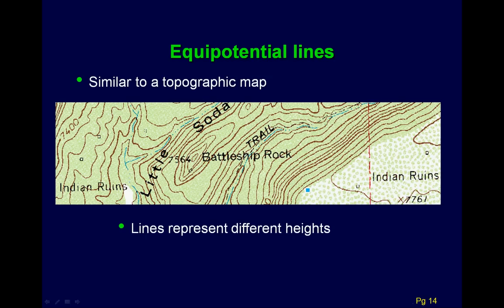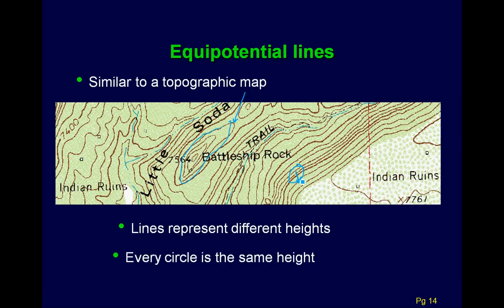We can compare this to a topographic map. On a topographic map, points at the same height lie on the same line — just like equipotential lines. Where the lines are closer together, the terrain is steeper — a direct analogy to the electric field. If these were potential lines, the electric field would be very strong where the lines are close together, and it would point downhill.